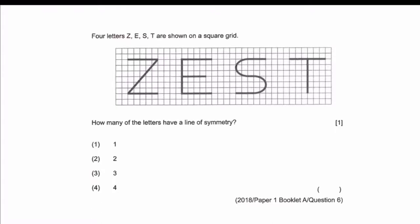Year 2018 paper. Four letters are given on a square grid. How many of the letters have a line of symmetry? Let's look at letter Z. If I draw a straight line down, the left and right don't match. A horizontal line doesn't match either. The last try is a diagonal line. Looking at the diagonal line, you might think this point and this point matches, but this line and the other line do not match. So the first option, letter Z, is out.